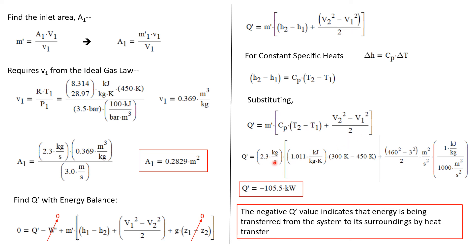Let's plug in values. The mass flow rate is 2.3 kilograms per second. The value of C sub P is 1.011 kilojoules per kilogram Kelvin. T2 is 300 Kelvin and T1 is 450 Kelvin. V2 is 460, V1 is 3. Each of these are squared, giving us units of meters squared per second squared. But we need units of kilojoules per kilogram. If you go through the unit conversion, you'll find that one kilojoule per kilogram is equivalent to a thousand meters squared per second squared. So rather than converting that every time the long way, I keep this as a handy conversion factor. I calculate that Q dot is minus 105.5 kilowatts.